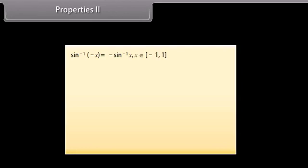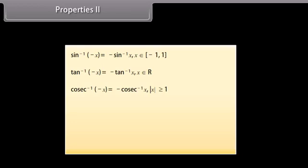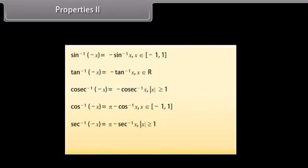sin⁻¹(−x) = −sin⁻¹ x, for x ∈ [−1, 1]. tan⁻¹(−x) = −tan⁻¹ x, for x ∈ ℝ. cosec⁻¹(−x) = −cosec⁻¹ x, for |x| ≥ 1. cos⁻¹(−x) = π − cos⁻¹ x, for x ∈ [−1, 1]. sec⁻¹(−x) = π − sec⁻¹ x, for |x| ≥ 1. cot⁻¹(−x) = π − cot⁻¹ x, for x ∈ ℝ.